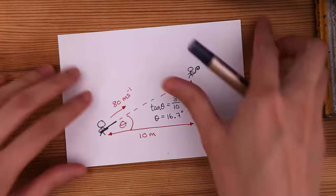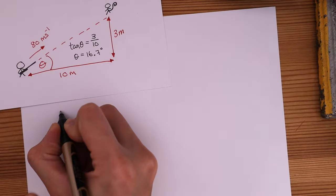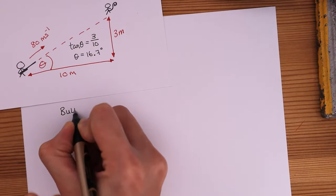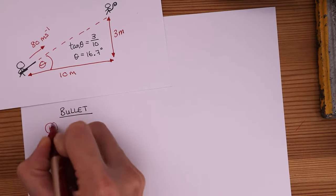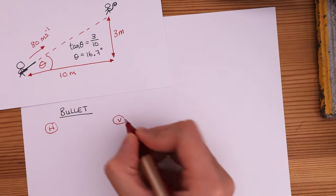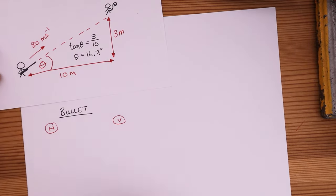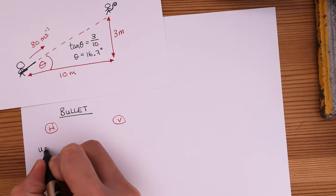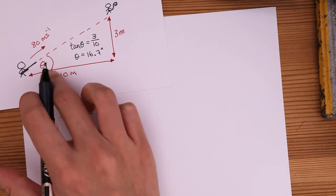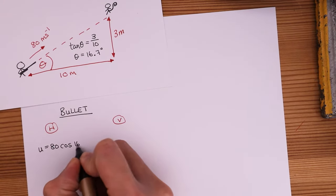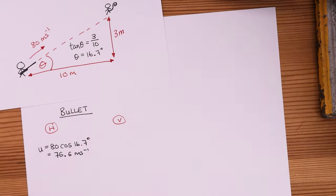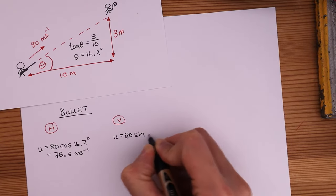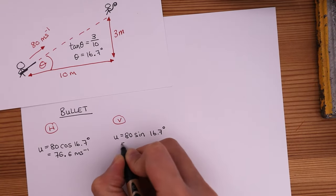Let's look at the bullet's motion before we look at the monkey's, and then we'll compare the two afterwards. And remember, the convenience of projectile motion is that we can separate the horizontal components from the vertical components. Just look at the rifle now. Horizontally, we can resolve the initial velocity to 80 times cos 16.7, which comes to 76.6 meters per second. Vertically, the initial velocity is 80 times sin 16.7, which gives us 23 meters per second.